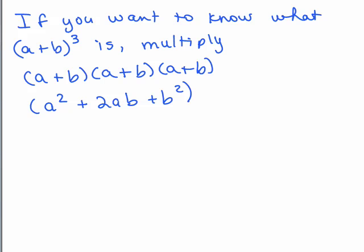If you want to know what the quantity a plus b cubed is, you'd really have to multiply a plus b times itself three times — a plus b times a plus b times a plus b. We know a plus b times a plus b is the formula for a perfect square: a squared plus 2ab plus b squared, but then you'd have to multiply that by another a plus b.